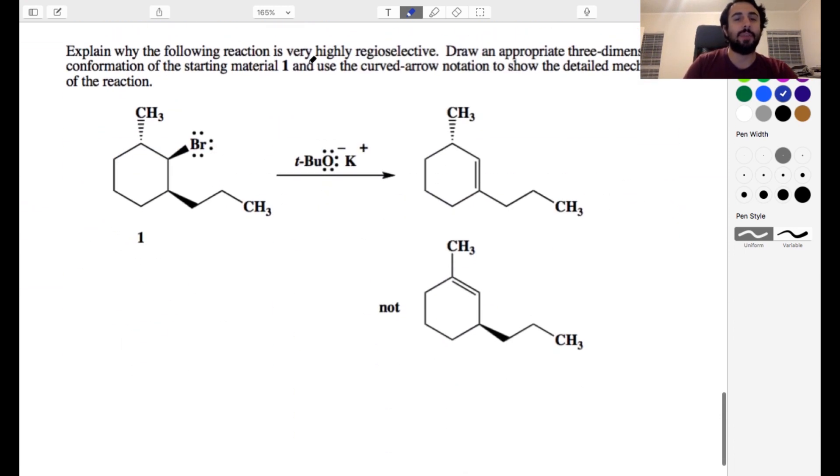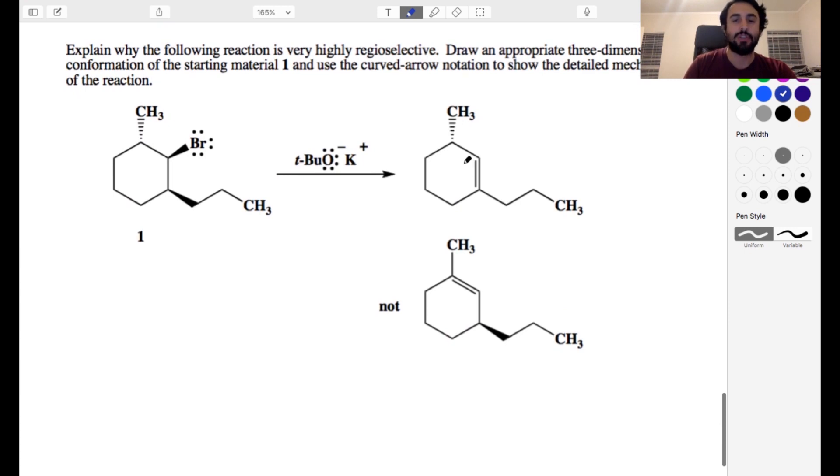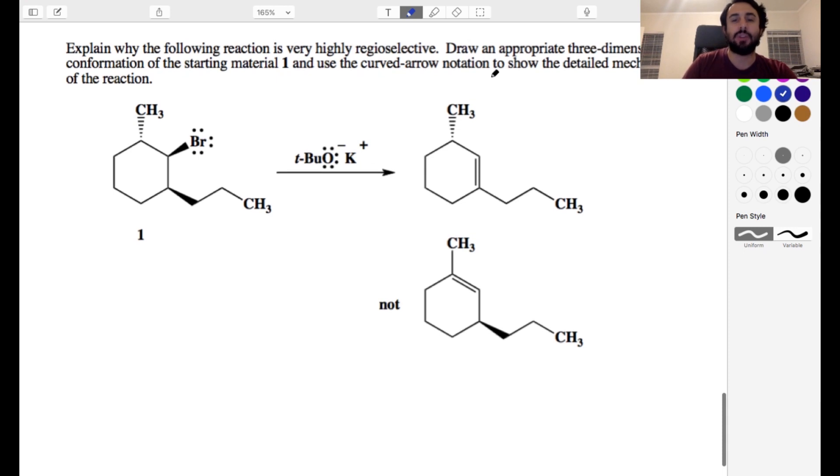Okay. Explain why the following reaction is highly regioselective. So we're going to get a lot of this and not, we're not going to get this, right? We're going to get pretty much just this. So draw an appropriate three-dimensional conformation of the starting material one and use the curved arrow notation. So we're going to show the mechanism. So we got to show the chair. Remember always, always, always when we're doing elimination, right? This is an elimination reaction because we've got tert-butoxide, right? Tert-butoxide is your classic E2 promoter. We see that thing. We know we're almost certainly going to be going E2. But we have a cyclohexane derivative as a starting material. And when you have a cyclohexane derivative, you've got to draw the chair. Otherwise you don't know what is going on sufficiently to be able to say which proton will be extracted in elimination. I'm having a tough time with my chairs today. So let's do that. Okay. That's a decent chair.